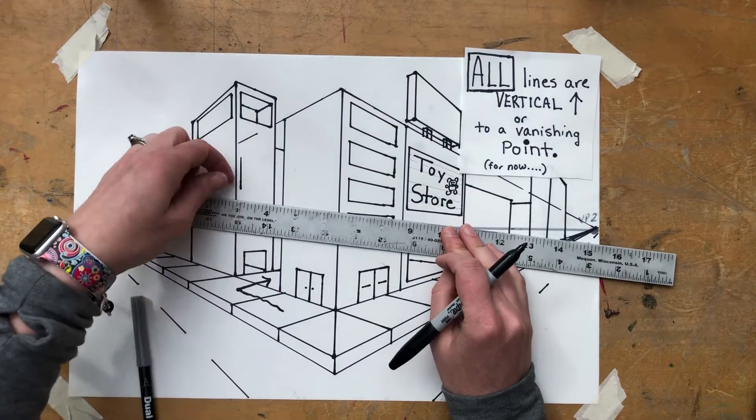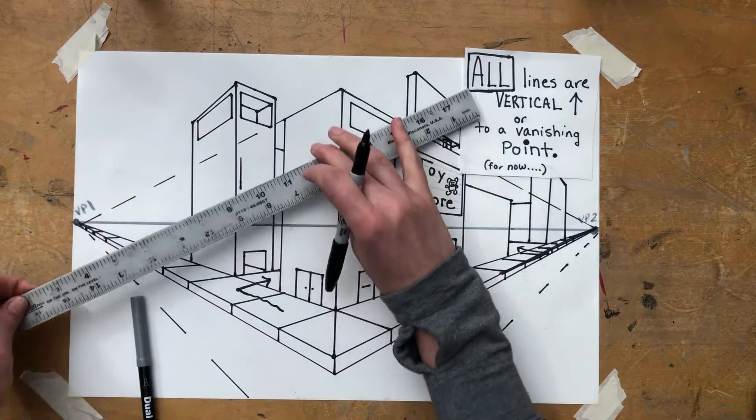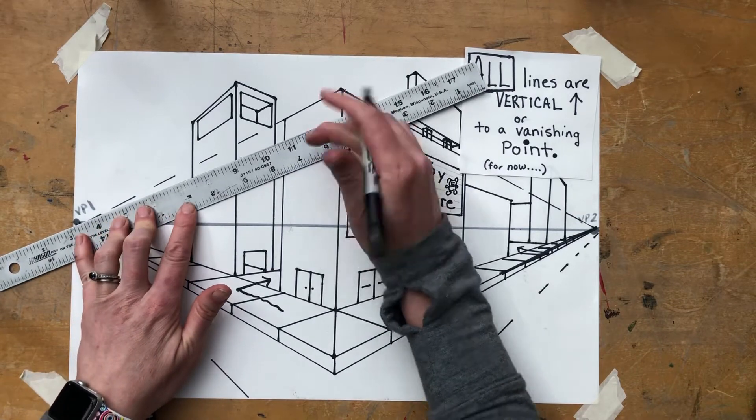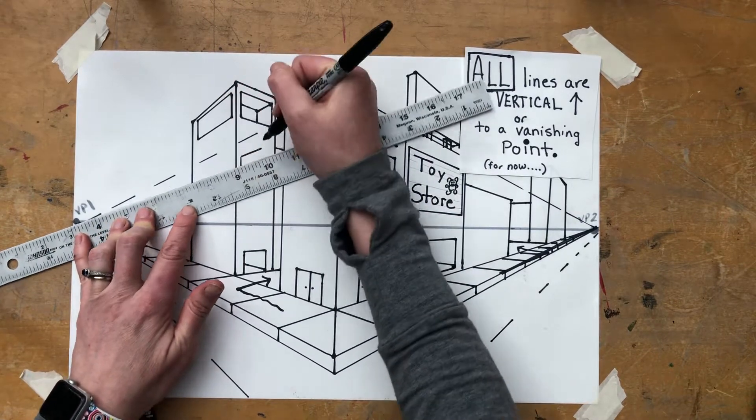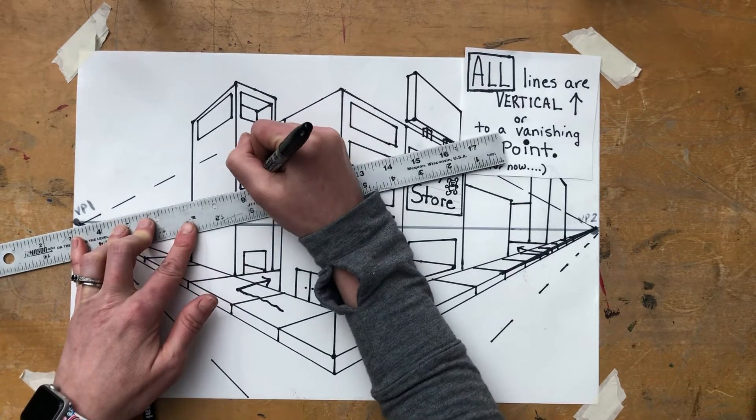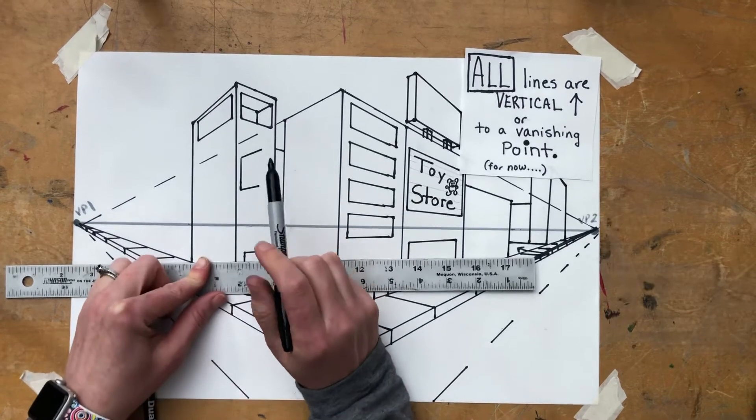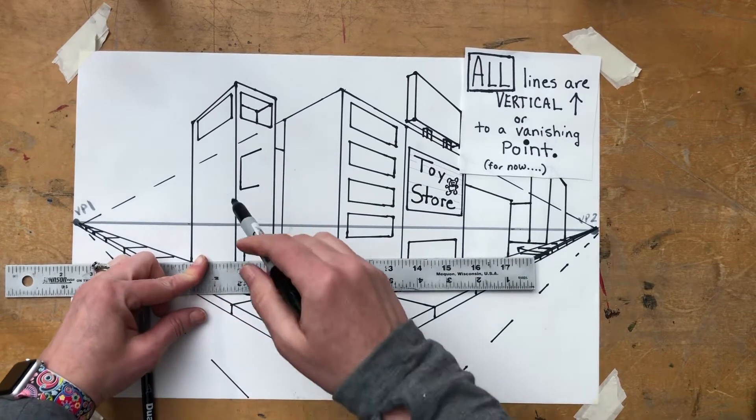But if we want something to stick off of the building and look like it's coming off of it, we are going to go to the opposite vanishing point. I'm going to just show you what that looks like for a little ways. If I just go a little ways, it kind of looks like the arms right now, these poles are sticking off of VP1 or off of the building right there.